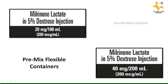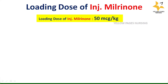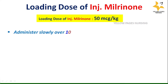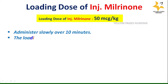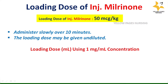The loading dose of injection milrinone is 50 microgram per kg, which is administered slowly over 10 minutes. The loading dose may be given undiluted. Let's look at an example for loading dose using 1 mg per ml concentration.